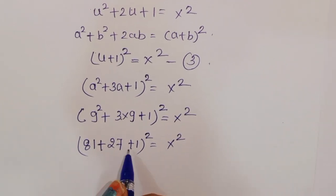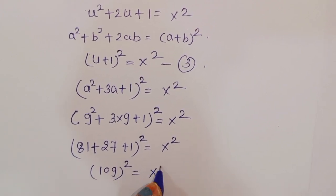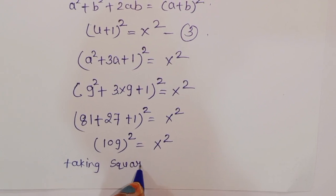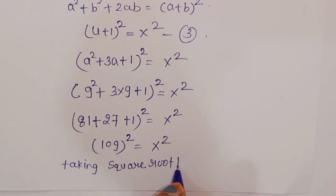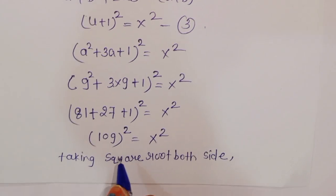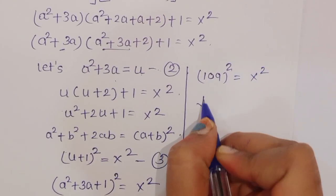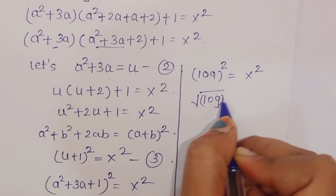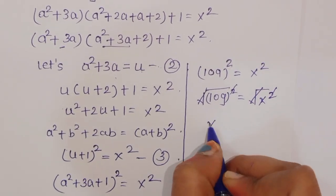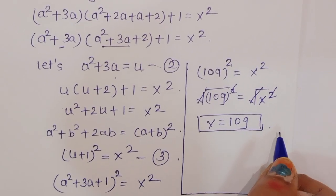Adding these terms, we get 81 plus 27 plus 1 equals 109. So 109 squared equals x squared. Taking the square root on both sides, x is equal to 109. This is the value of x.